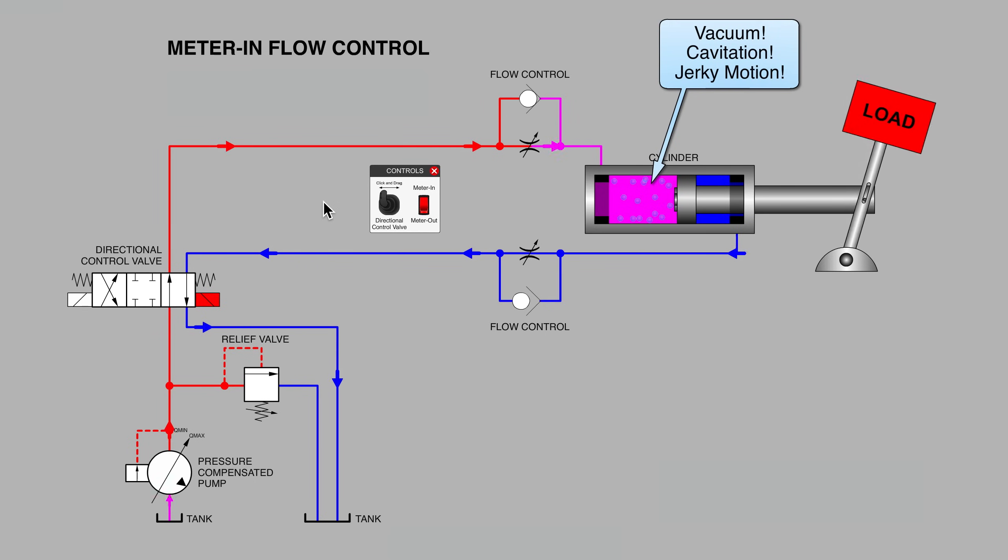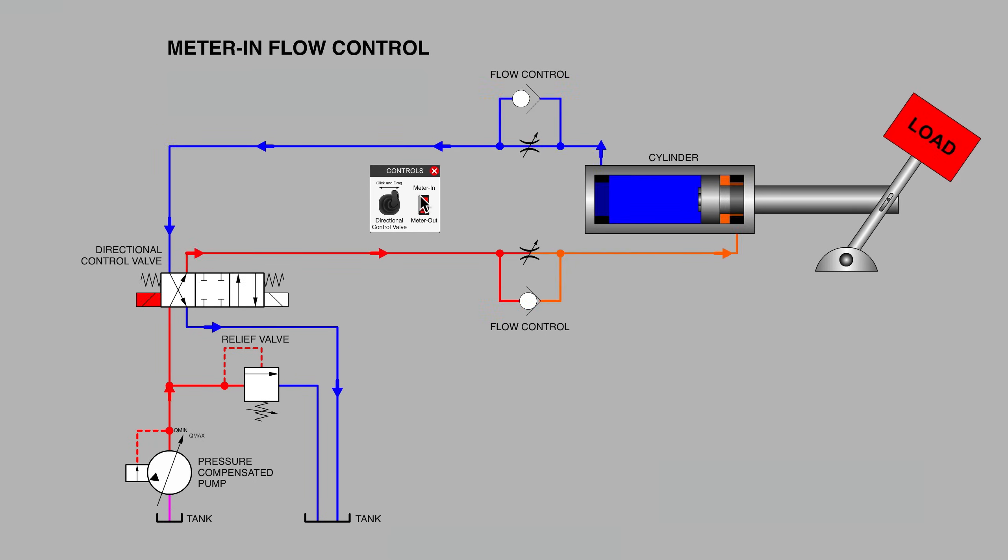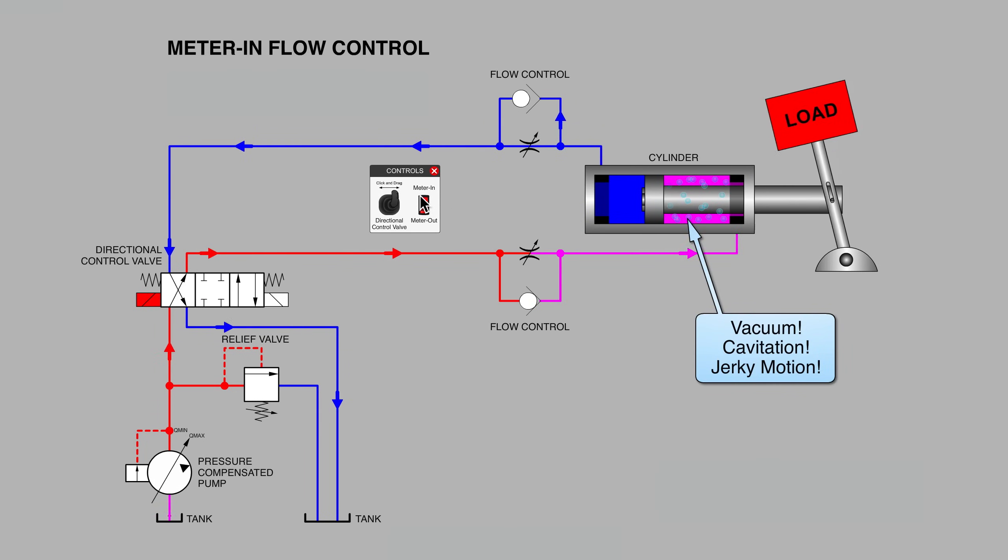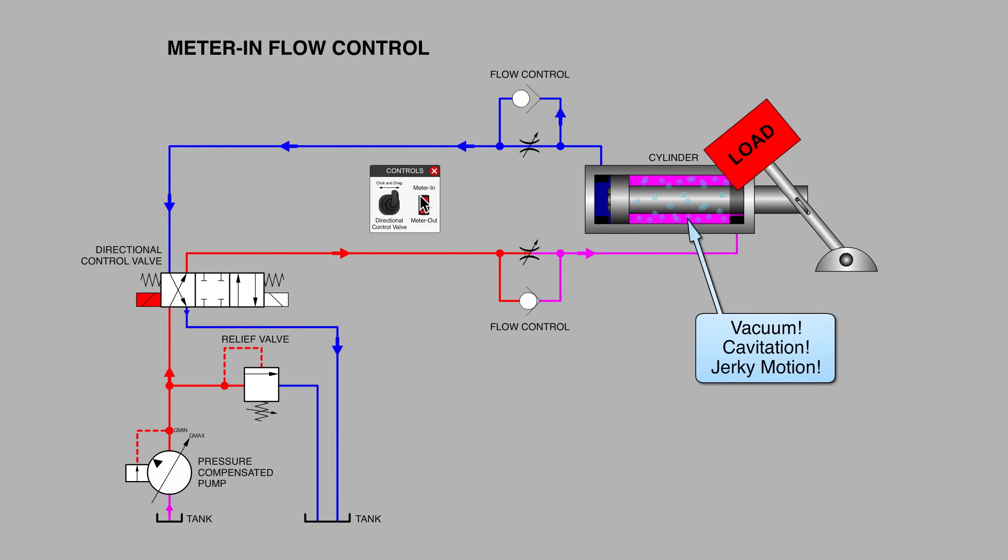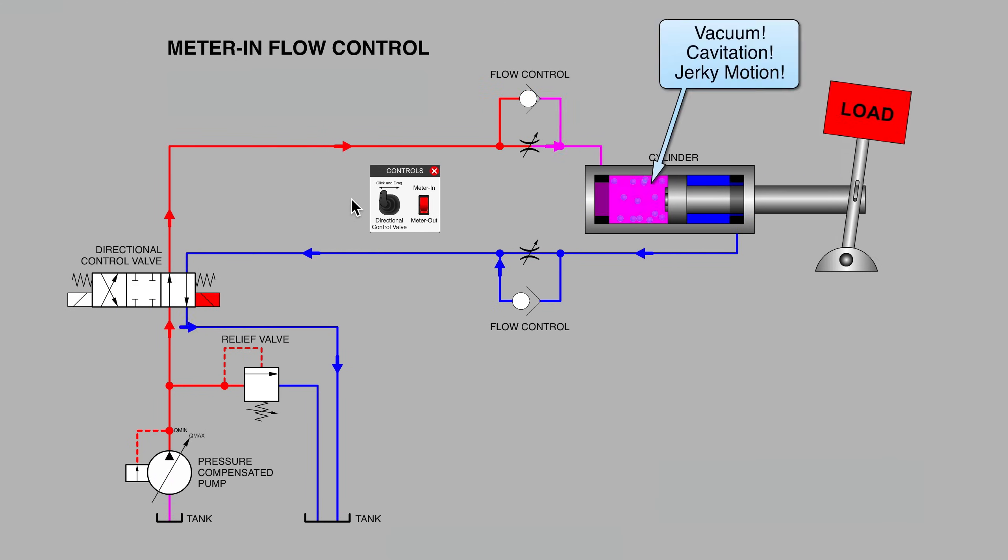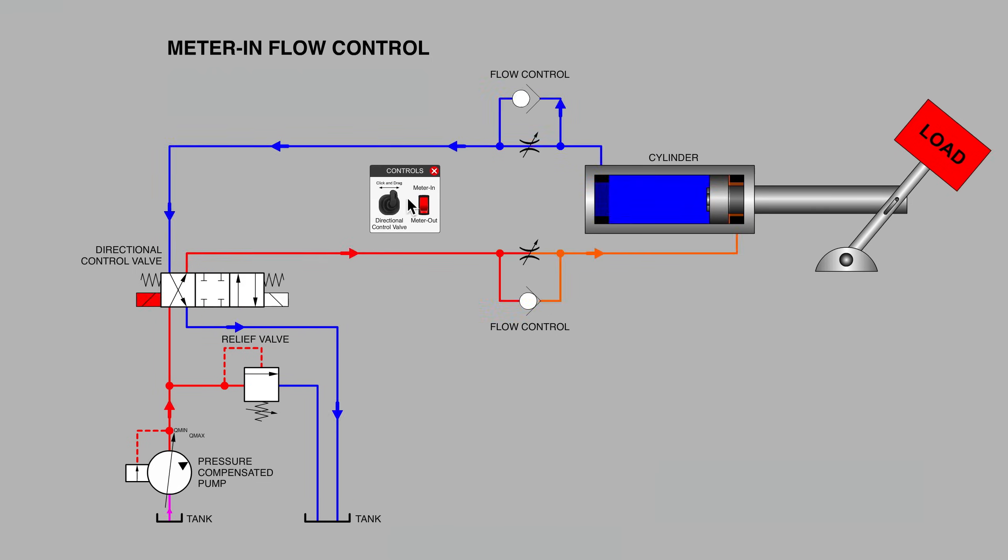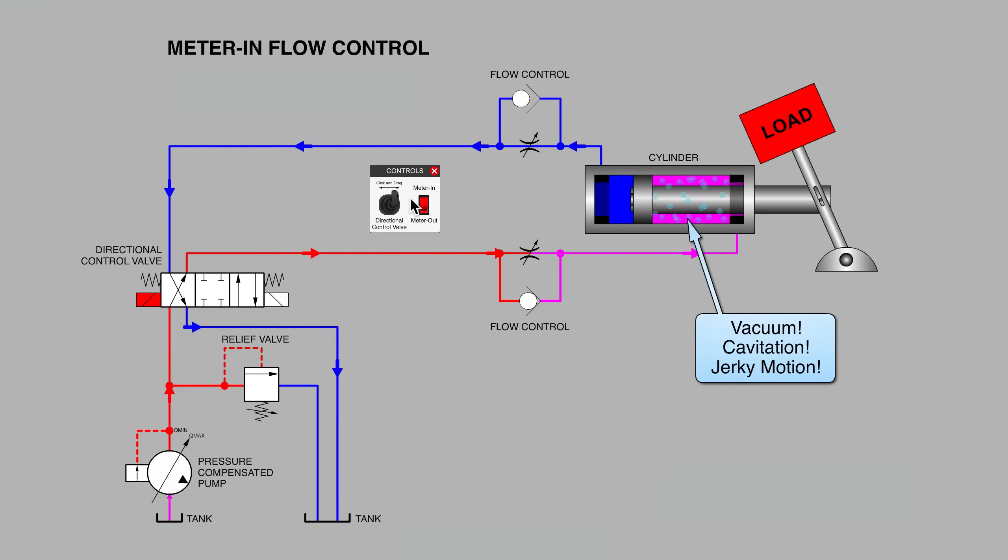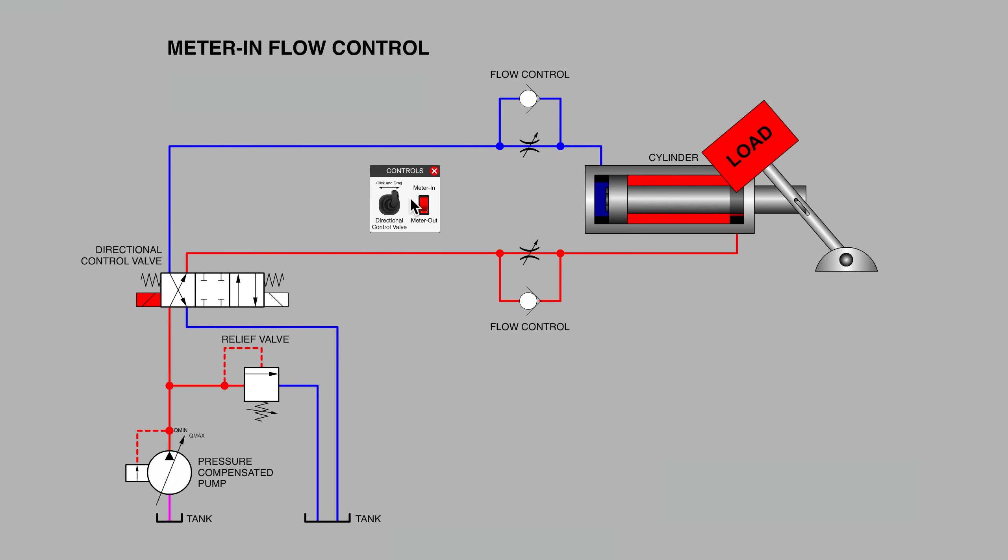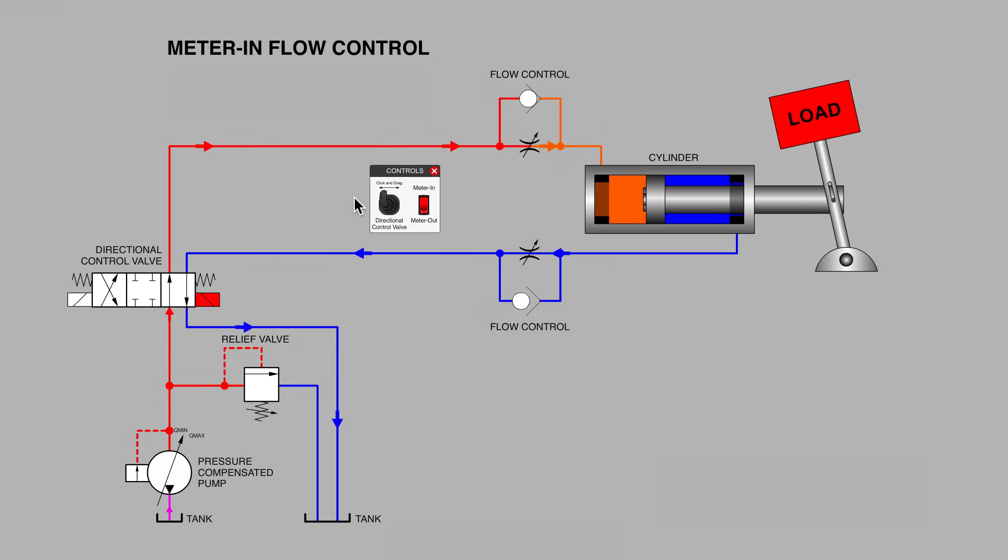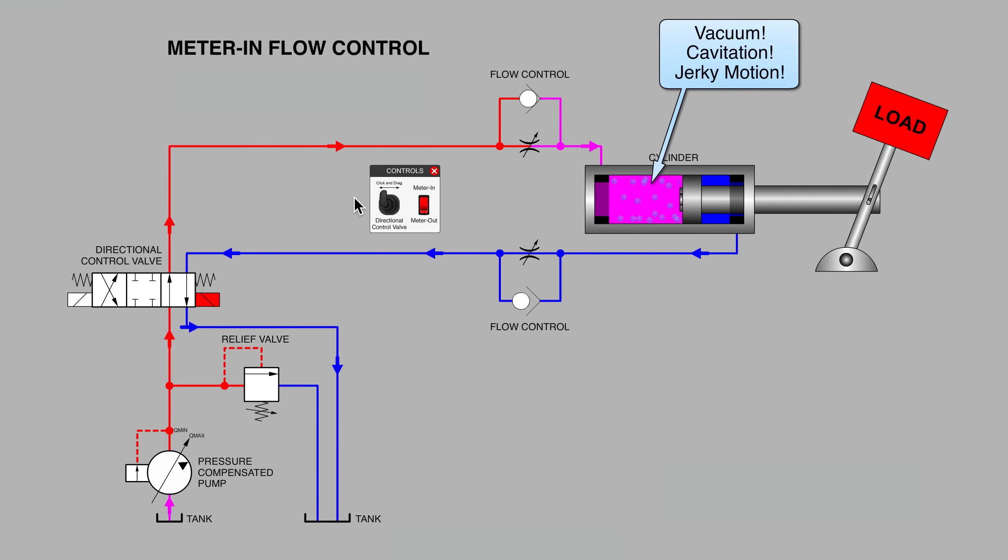Now, of course, what's special about this particular arrangement is that we've got a load that runs over center. That pendulum overrunning load is a handy one in these animations for understanding what the effects of a runaway load, sometimes referred to as a negative load on a cylinder, might do to various parameters of the hydraulic system. In this case, we could tell that not all is well with the meter in scenario.